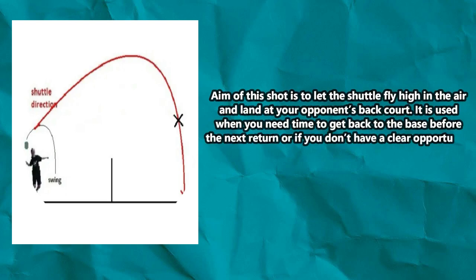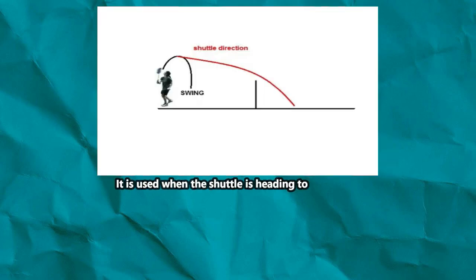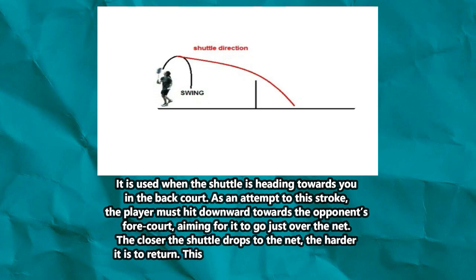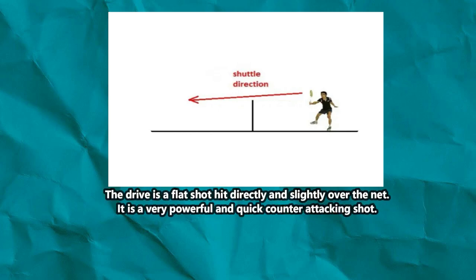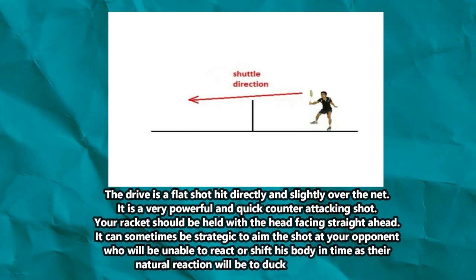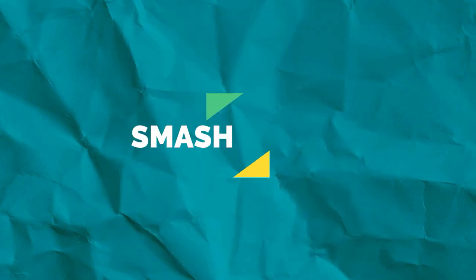Badminton shots: The first is the clear shot. The aim of this shot is to lift the shuttle high in the air so it lands at your opponent's backcourt. It is used when you need time to get back to base before the next return, or if you don't have a clear opportunity to win the point. Next is the drop shot, used when the shuttle is heading towards you in the backcourt. The player must hit downward towards the opponent's forecourt, aiming for it to go just over the net. The drive shot is a flat shot hit directly and slightly over the net — a very powerful and quick counter-attacking shot. Your racket should be held with the head facing straight ahead, and it can be strategic to aim at your opponent who will be unable to react in time.